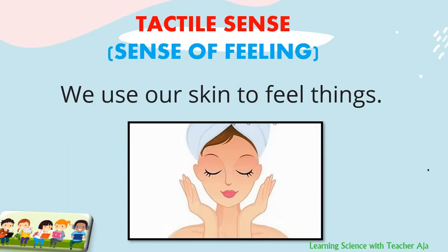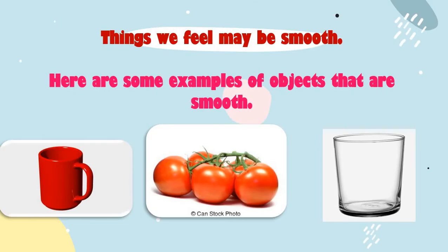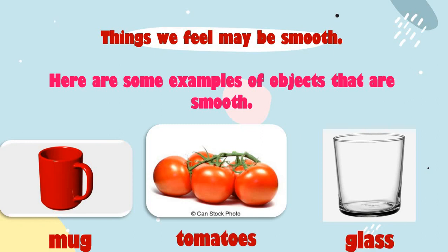Tactile sense is the last sense, which is the sense of feeling. We use our skin to feel things. Things we feel may be smooth. Here are some examples of objects that are smooth. The first one is a mug. The second picture are tomatoes. And the last one is glass.